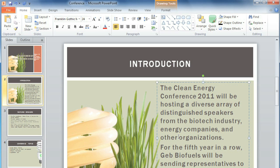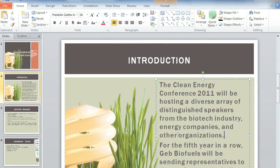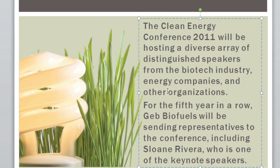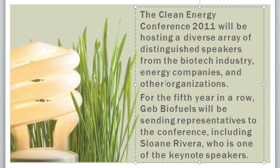Indents and line spacing are two things that you can use to control how the text looks on the slide, and you can adjust them whether you're using normal paragraphs or a bulleted or numbered list. If you just want to quickly add a first line indent to a paragraph, you can put the insertion point at the beginning of the paragraph and then press the Tab key.